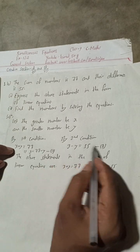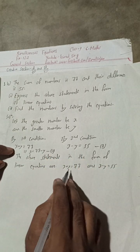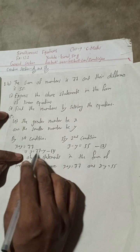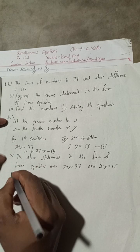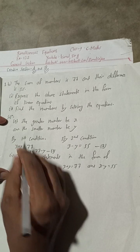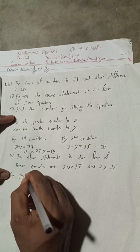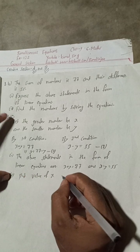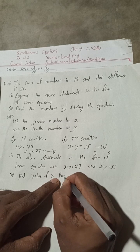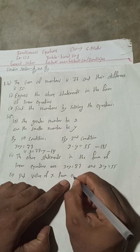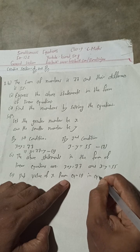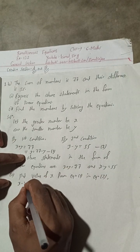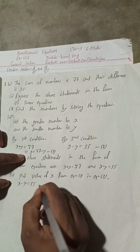To make the solution easy, put the value of x from equation one into equation two. Equation two is x minus y equals 55, so substituting x gives 77 minus y, minus y equals 55.